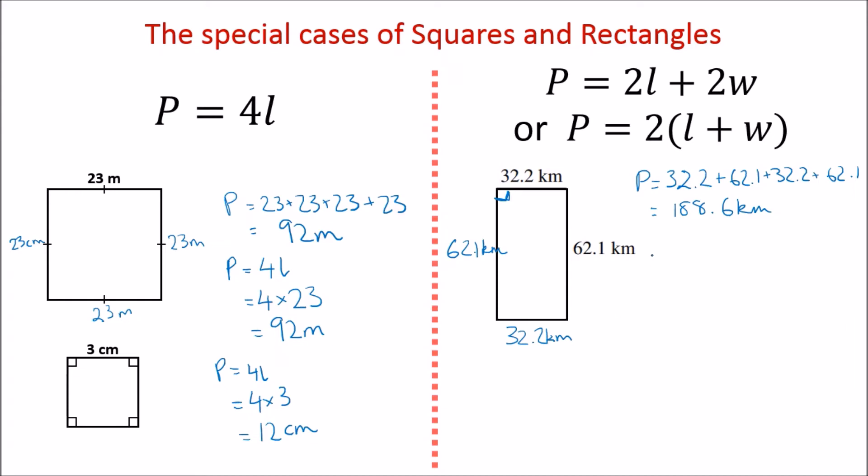So for this example here, we would write P equals—let's do the first one here—two length plus two width. So two times 32.2 plus two lots of 62.1, and it's going to give us the exact same answer that we got before. Don't forget units.